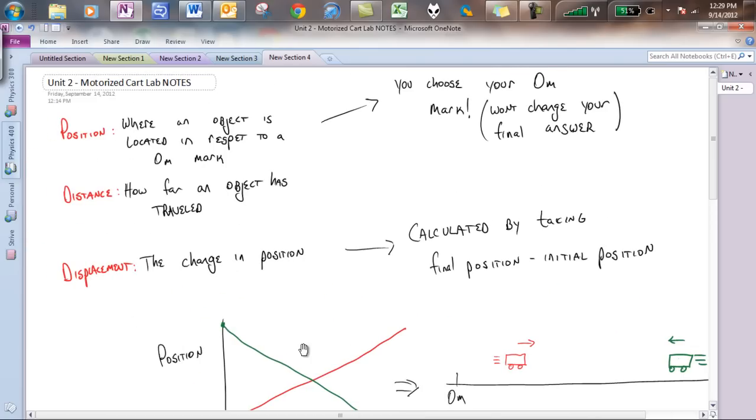So let us first start off by the three definitions of position, distance, and displacement. You'll notice that these are three different things. Position is where an object is located in respect to a zero mark. The key idea is you choose your zero mark. You can pick that wherever you'd like. And you'll notice as we go through problems, that won't actually change your final answer.